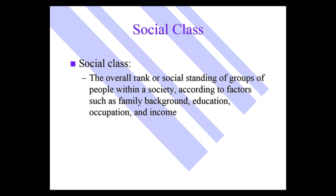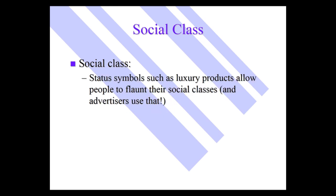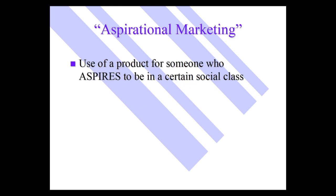How do marketers sometimes use it for advertising? Status symbols such as luxury products allow people to flaunt their social class, and advertisers use that. It's often called aspirational marketing because people aspire to this — it's the use of a product for someone who aspires to be in a certain social class, and you can see this in advertising all the time.